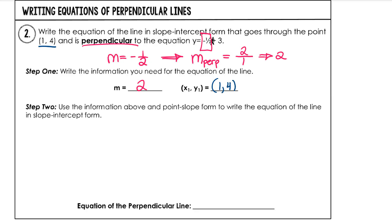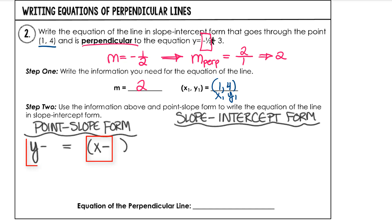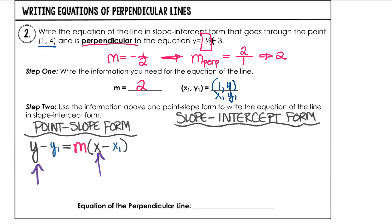The point that it needs to go through is (1, 4), which will be our x1, y1. Keep in mind that for point-slope form, the x and y are unchanging — they are always y and x. The parts we plug in, dependent on the problem, are the point x1, y1 and the slope m. We never replace y or x with a number, because if we want an equation of a line, we need to start with a y and an x. Let's create our point-slope form equation: y minus 4 equals 2 times (x minus 1). This is the point-slope form.